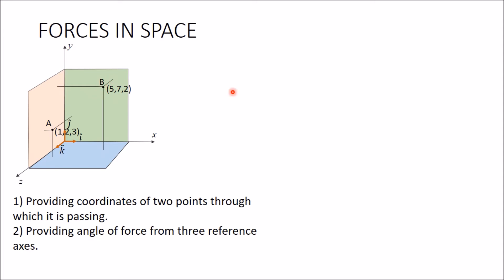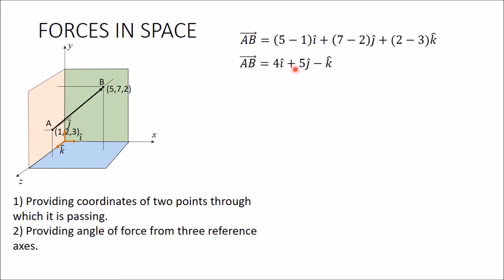The vector AB can be represented using the coordinates of the two points. To find vector AB, subtract the coordinates of point A from point B: (5−1), (7−2), and (2−3), giving AB = 4i + 5j − k. Here, 4 is the magnitude of the component along x, 5 along y, and −1 along z. The magnitude of AB is the square root of (4² + 5² + 1²), which equals 6.48.